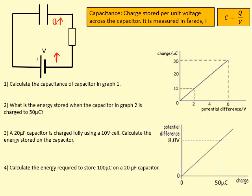I'm going to use this graph here to calculate the capacitance. Capacitance equals change in charge divided by change in voltage, which is the gradient of that graph. So it's going to be 30 microcoulombs divided by 6 volts, which gives me 5 microfarads. That means I can store 5 microcoulombs per unit voltage applied.